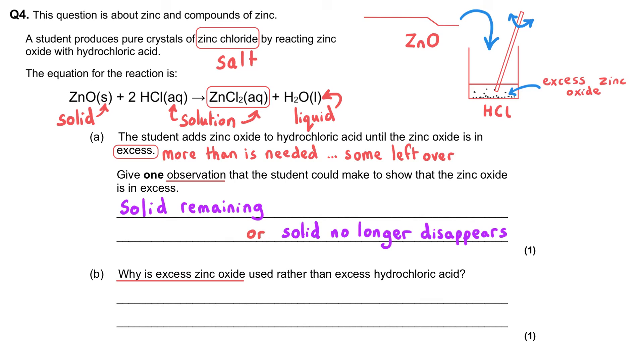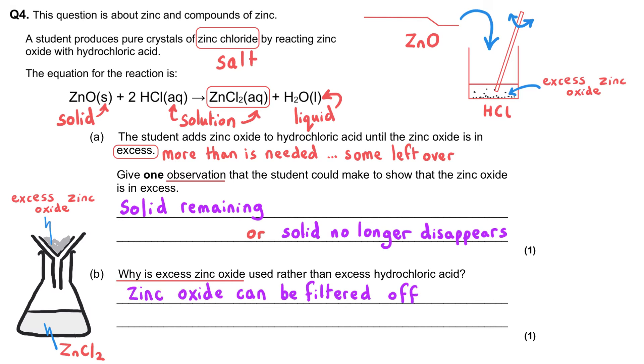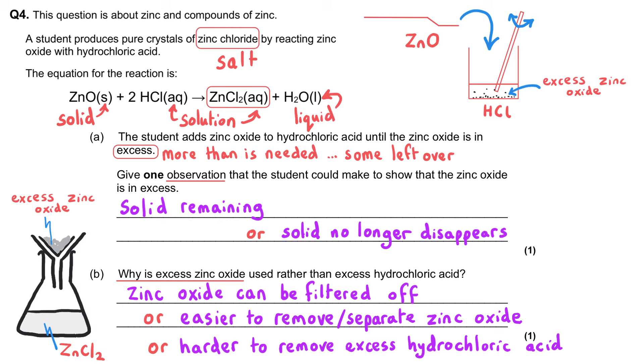If our excess is a solid, like zinc oxide, it can be filtered out. The excess zinc oxide would be caught in the top of the filter paper as a residue, and the zinc chloride solution would collect as a filtrate in the conical flask. That separation is very easy. We could say the zinc oxide can be filtered off, or it is easier to remove or separate the zinc oxide, or we could say it is harder to remove the excess hydrochloric acid.